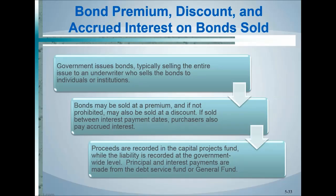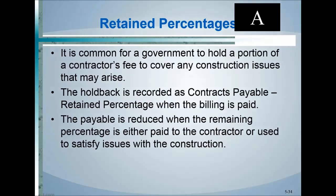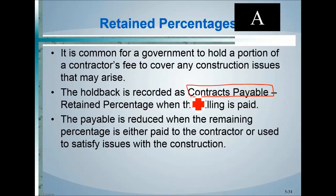When bonds are issued, they may need to be issued at a premium or discount depending on market interest rates. Additionally, retained percentages may apply — a certain percentage of the contracted amount is withheld from the contractor and held as a payable until all contract requirements are satisfied. These are issues to address as capital projects wrap up.